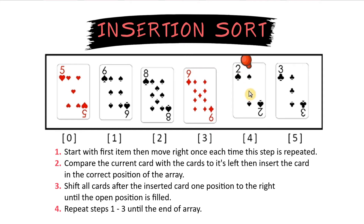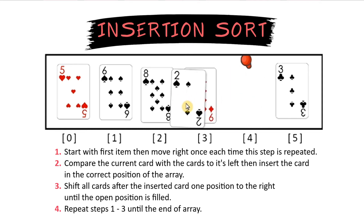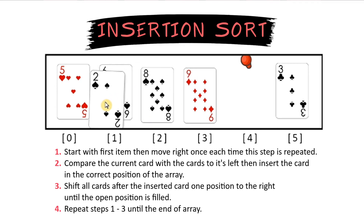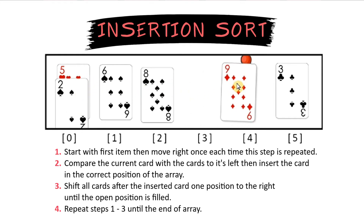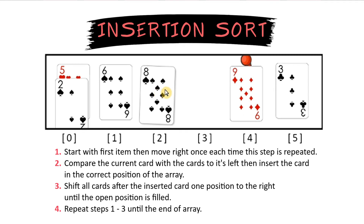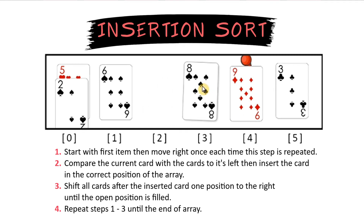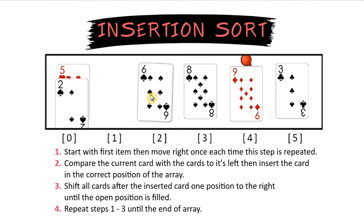Then we have the 2. We'll check to see if the 2 is less than the 9, the 8, less than 6, and less than 5. Since it's less than all of these, it belongs at the very front. That means we have to shift all 4 cards one spot over to the right: the 9, the 8, the 6, and the 5.